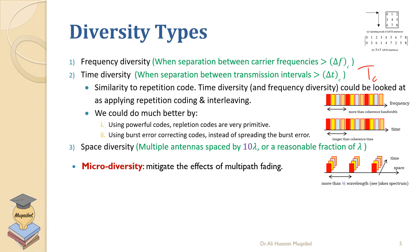Another way to classify diversity: we can think of micro diversity where we mitigate the effect of multipath fading. We can also have another type of diversity called macro diversity. Micro diversity mitigates small scale effects, like having two antennas at the receiver side on the mobile set.